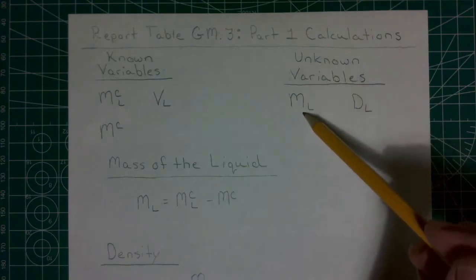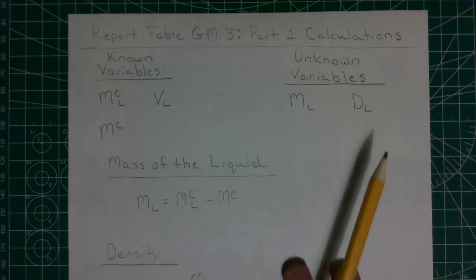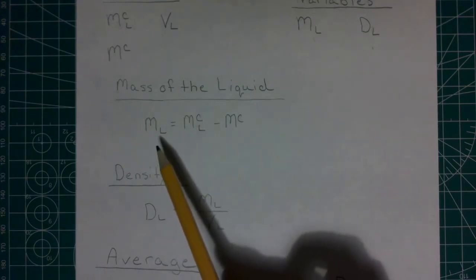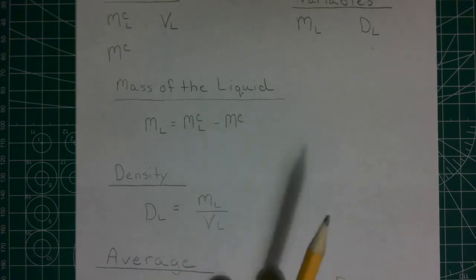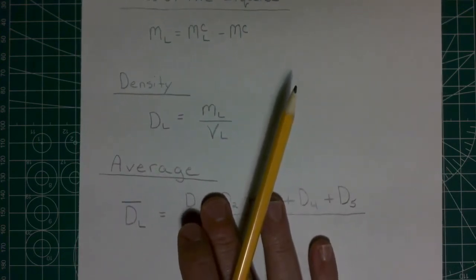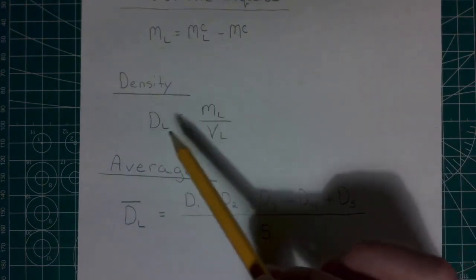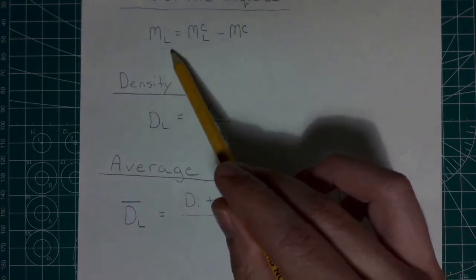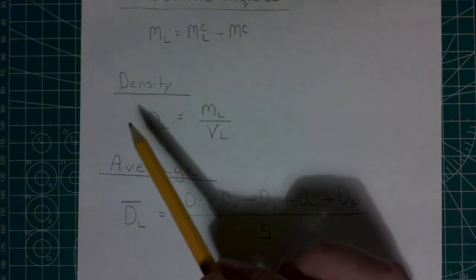The thing that they're going to ask us about is going to be, what is the mass of the liquid, and what is the density of that liquid? To calculate the mass of the liquid, this is just our weight by difference we just saw. We're going to get the mass of the liquid by taking the mass of the cylinder and the liquid, and subtracting out the mass of the cylinder. To calculate the density, we're going to need our density equation. So density is equal to mass divided by volume. We'll take the mass of the cylinder from the problem previously, divide it by the volume of the cylinder, and we'll get the density of the cylinder.